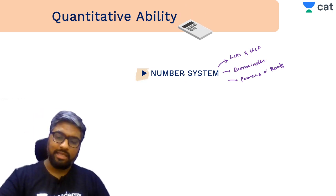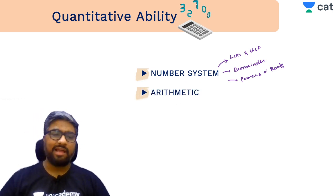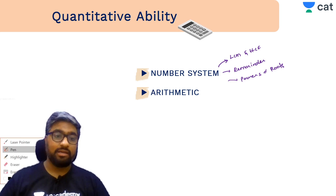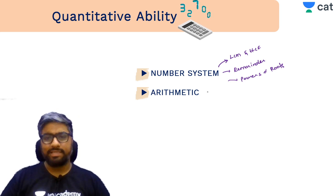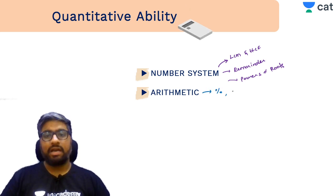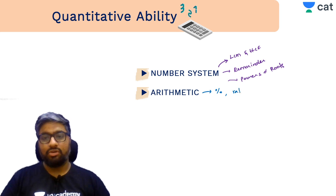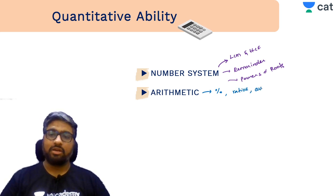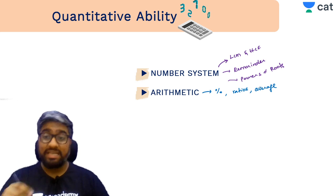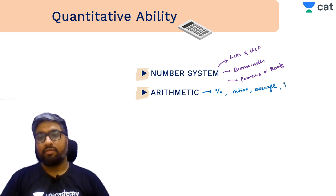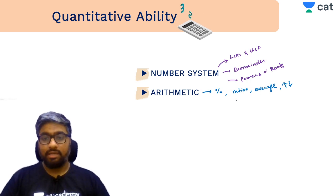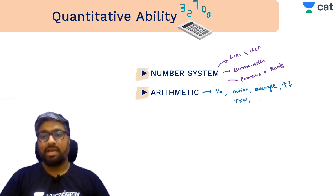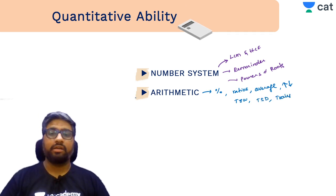Then comes Arithmetic — fun but equally complex because questions are complexified. Concepts here include percentages, ratios, averages, mixtures and allegations, profit and loss, time and work, time-speed-distance, trains, and boats. All of these fall under the Arithmetic area. These are not all the concepts; I'll tell you in detail — but most of these come from your 9th and 10th standard books.